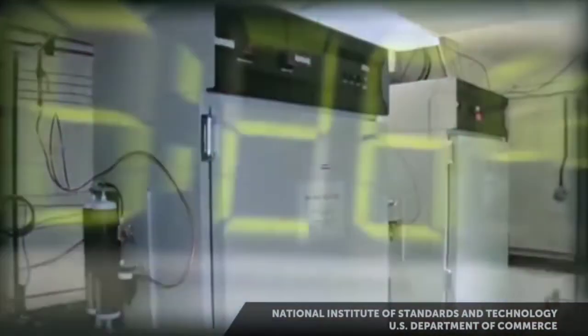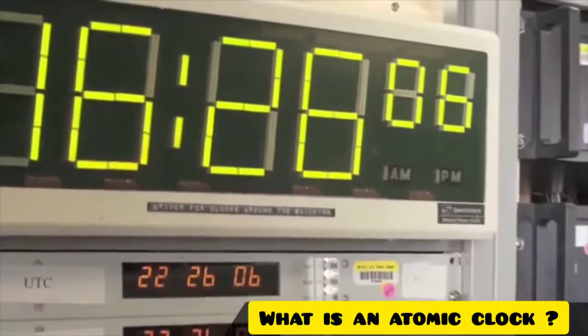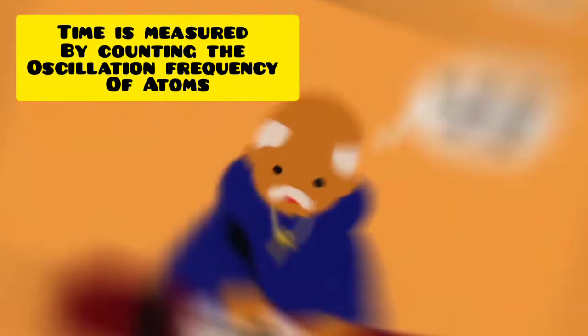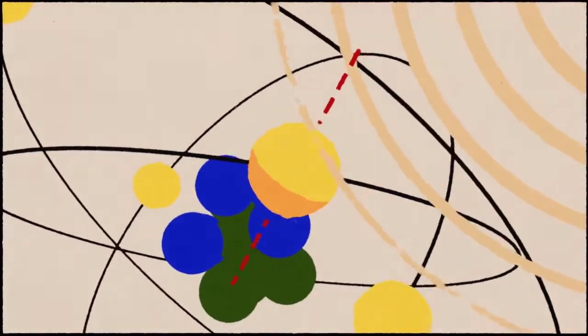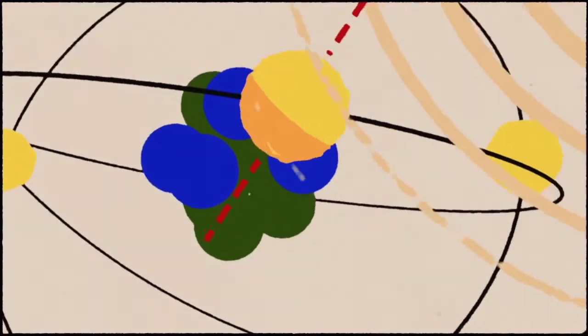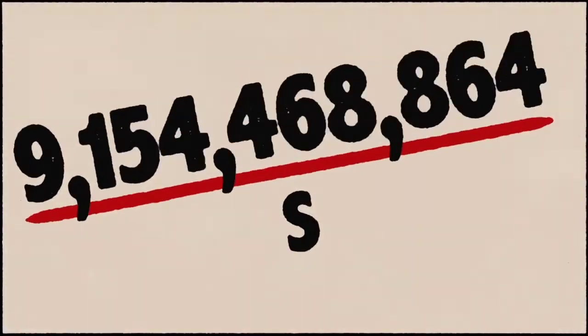So here we are on the main topic. What is an atomic clock? Atomic clock is a clock in which time measurement is done by counting the oscillation frequency of atoms. The biggest advantage of an atomic clock is that atoms oscillate at extremely consistent frequencies.